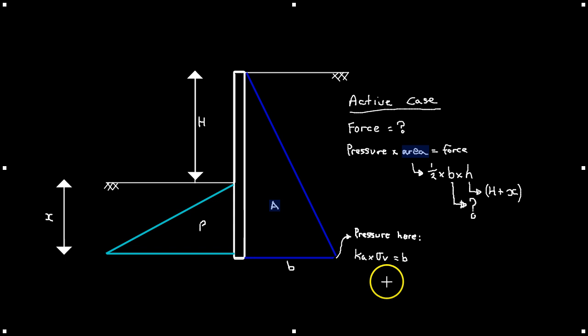So the active force which we're going to denote here as Pa is equal to a half times Ka times sigma v times in brackets h plus x.